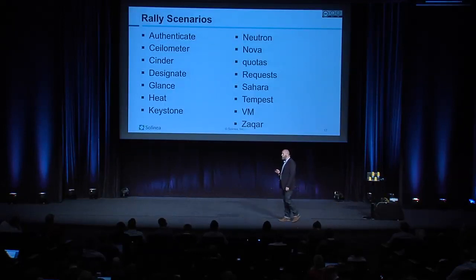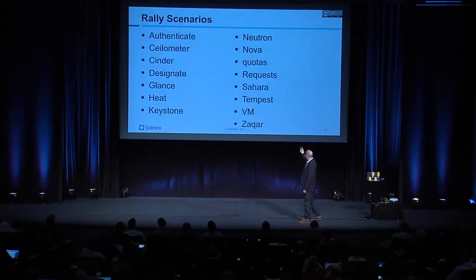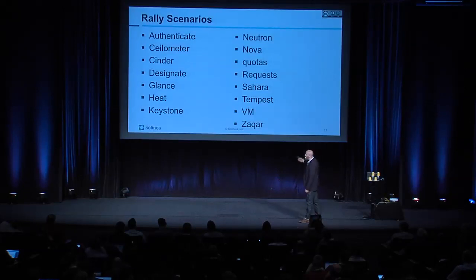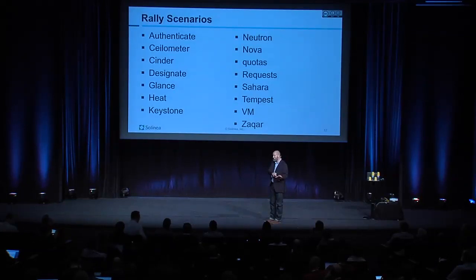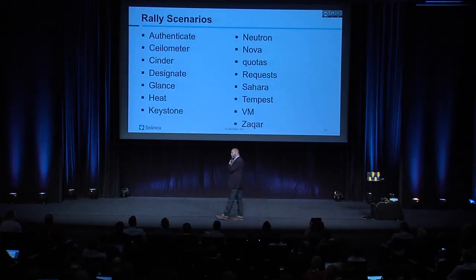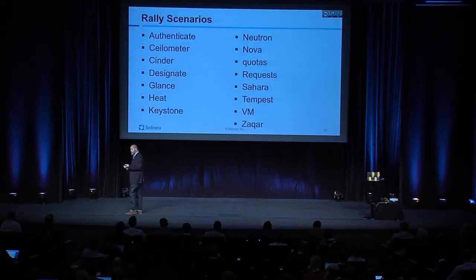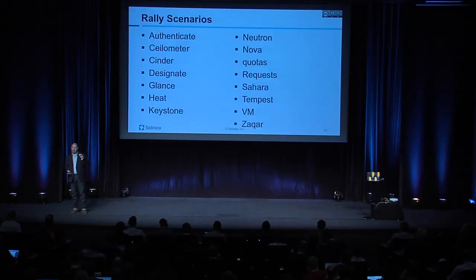Rally scenarios are written across a large number of different components — everything from authentication to newer things like Sahara and Zaqar. In addition, Tempest is in there: I can actually use Rally as a test runner for Tempest, skipping over some of the more complex configuration options and just running a small subset of those tests. I can pick specific test numbers and give the names for a scenario, or I can use a regular expression — for example, run only Glance tests — and set those up as different scenarios.